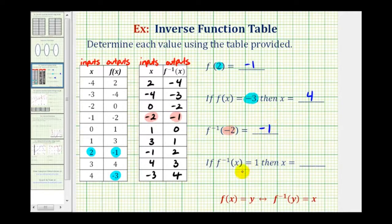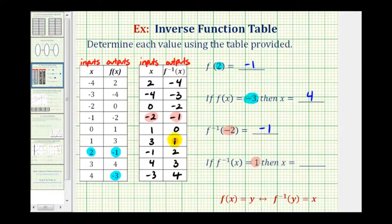For the last question, if f inverse of x equals 1, we determine the value of x. Here, positive 1 is the output of the inverse function, and we need to find the input. Looking at the inverse function outputs for a value of positive 1, the corresponding input x must equal 3. And that's going to do it for this question — I hope you found this helpful.